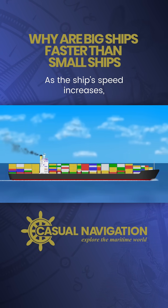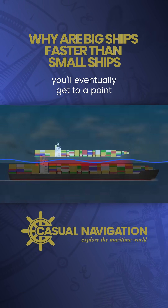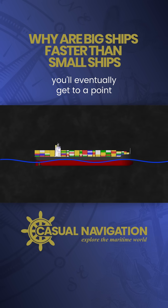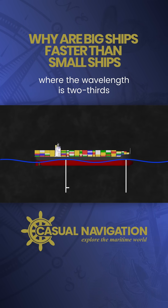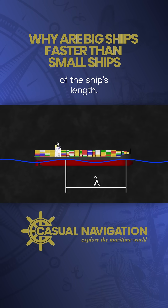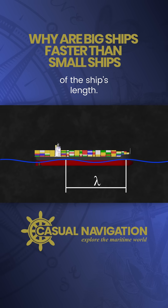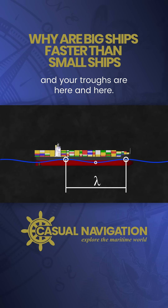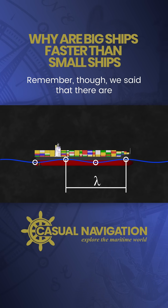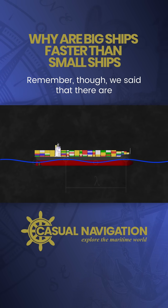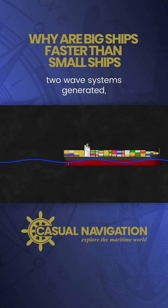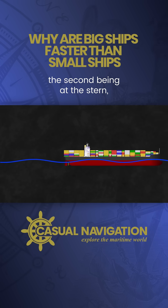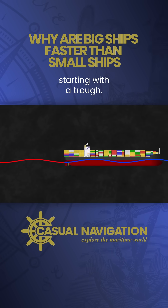As the ship's speed increases, you'll eventually get to a point where the wavelength is two-thirds of the ship's length. Your peaks are here and here, and your troughs are here and here. Remember though, we said that there are two wave systems generated, the second being at the stern, starting with a trough.